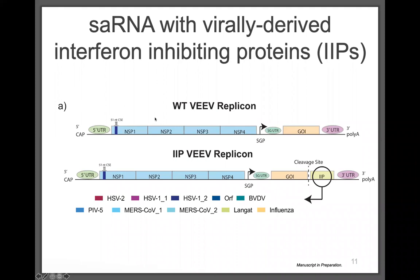We made a library of what we call IIPs — interferon inhibiting protein replicons. We chose a library of proteins known to inhibit the interferon response and encoded them in the RNA as well. The idea is that they express these proteins, which inhibit the interferon response, and we would hopefully see more protein expression as a result.